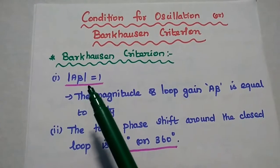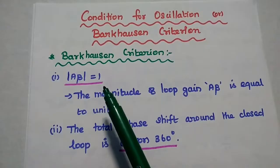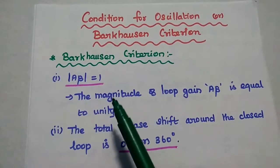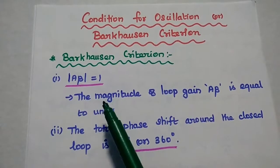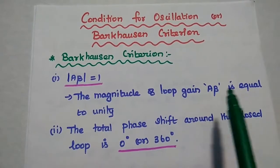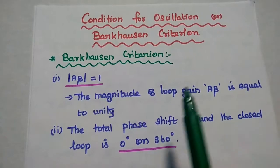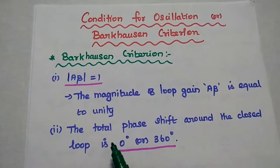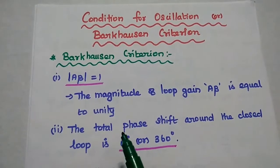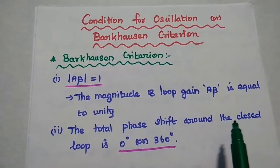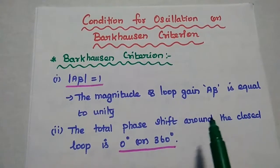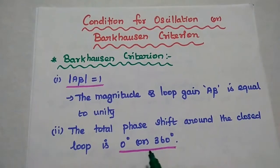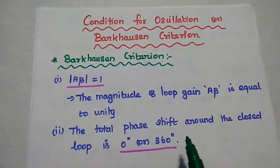The first condition is: modulus of Aβ is equal to 1, that is the magnitude of loop gain Aβ is equal to unity. The second condition is: the total phase shift around the closed loop is either 0 degrees or 360 degrees.